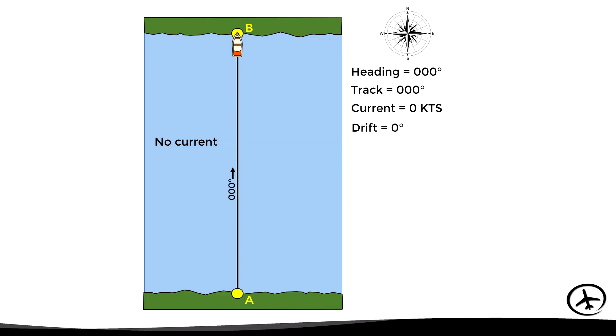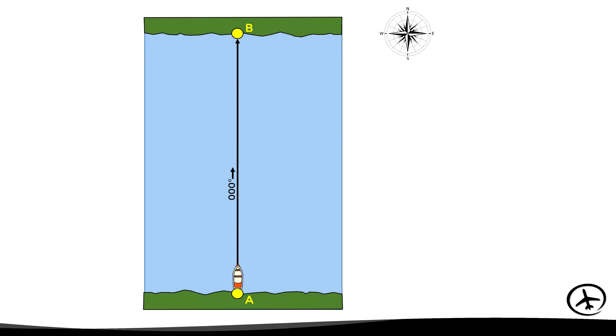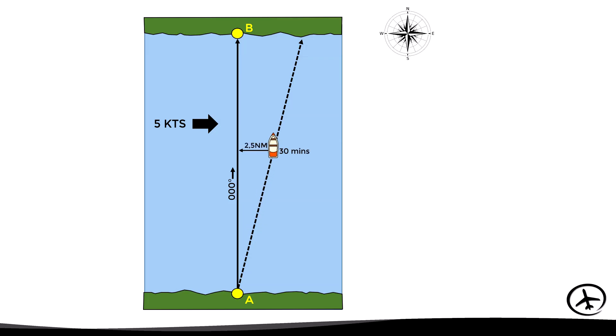Now let's analyze the same situation but with a current of five knots flowing from left to right in relation to the desired course. In this case, if the boat sails with a north heading, the current will deviate the boat to the right. This five-knot current implies that after one hour it will push the boat five nautical miles off course, so after 30 minutes the boat will be 2.5 miles off course.